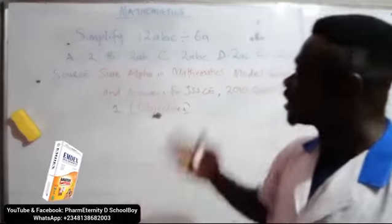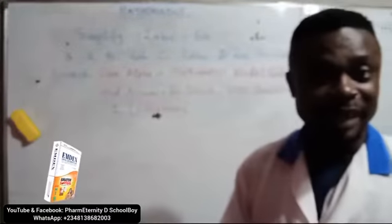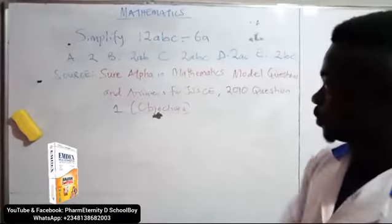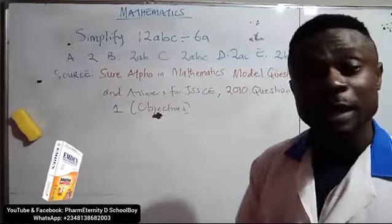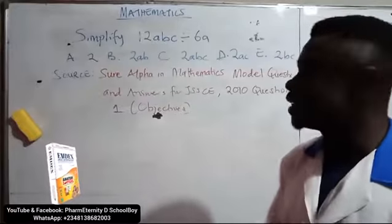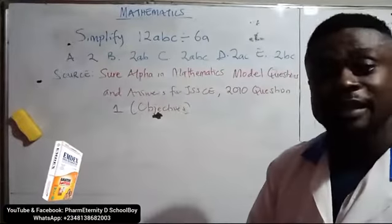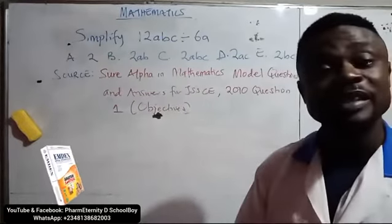The question says, simplify 12abc divided by 6A. Option A: 2, B: 2ab, C: 2abc, D: 2ac, E: 2bc.